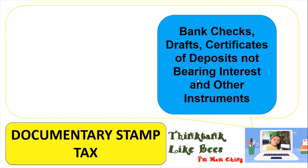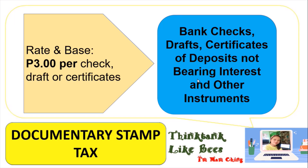For bank checks, drafts, certificates of deposit not bearing interest, and similar instruments, the computation is 3 pesos per check, draft, or certificate. For example, if you have 10 bank checks: 10 multiplied by 3 pesos equals 30 pesos in documentary stamp tax. This applies whenever you are dealing with these types of instruments.